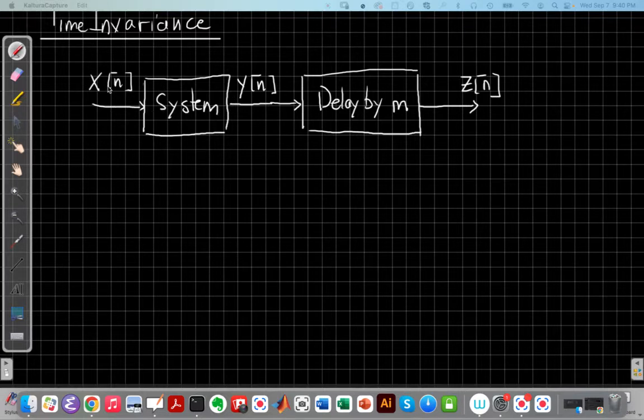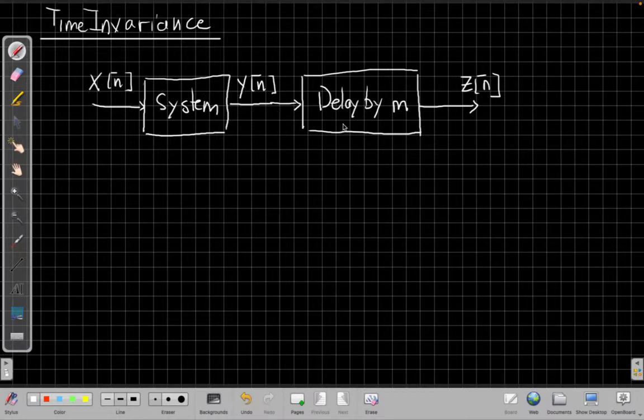So if we have our system that takes some input x[n] that has an output y[n], and then we take that output y[n] and delay it by m, m as in m samples, we'll call that output z[n].